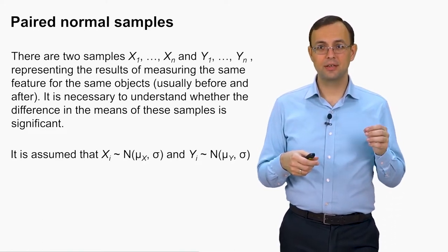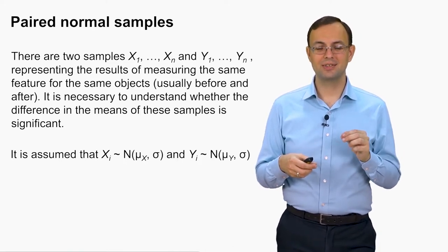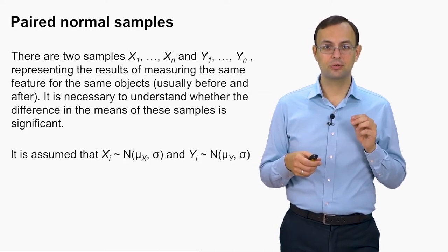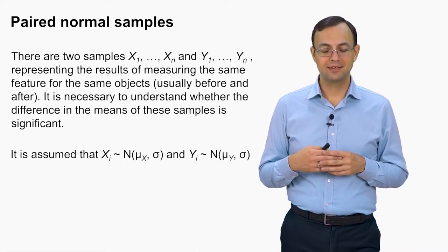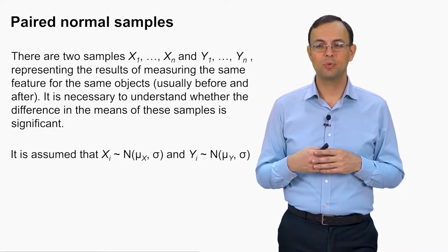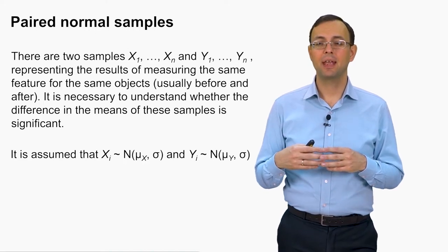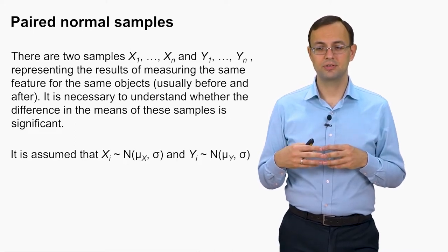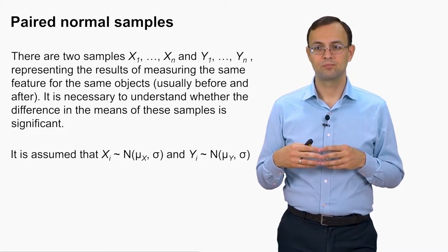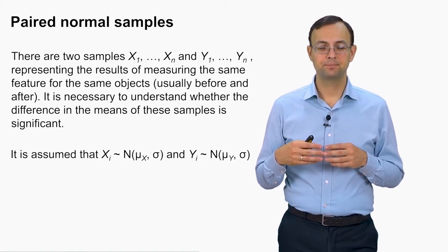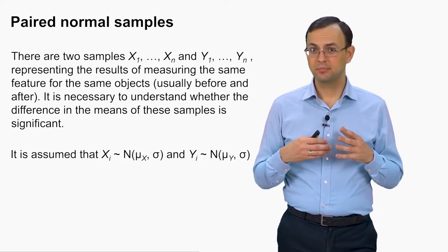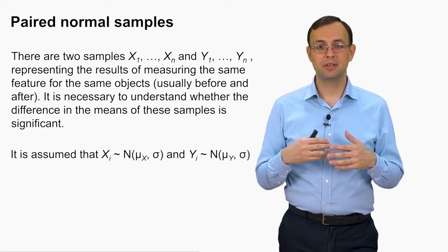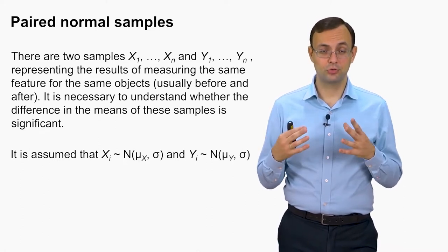The first case we will discuss is the situation when we can make an additional assumption that both samples are normally distributed — that the x's follow a normal distribution with parameters mu_x and sigma, and the y's are also distributed according to the normal distribution. This is usually just a standard assumption, as many numerical features we observe in real life are normally distributed.